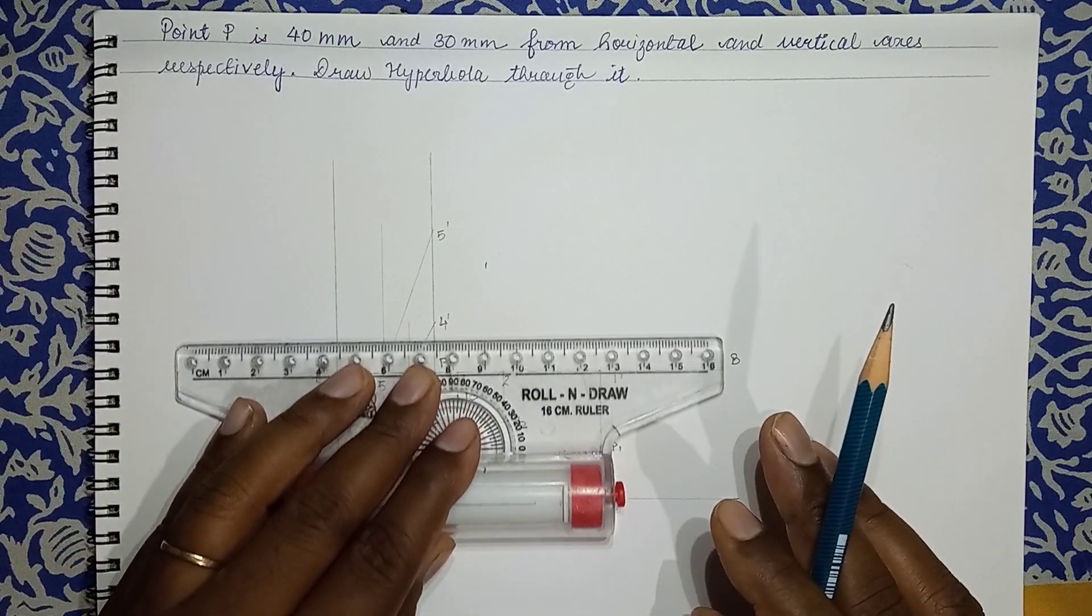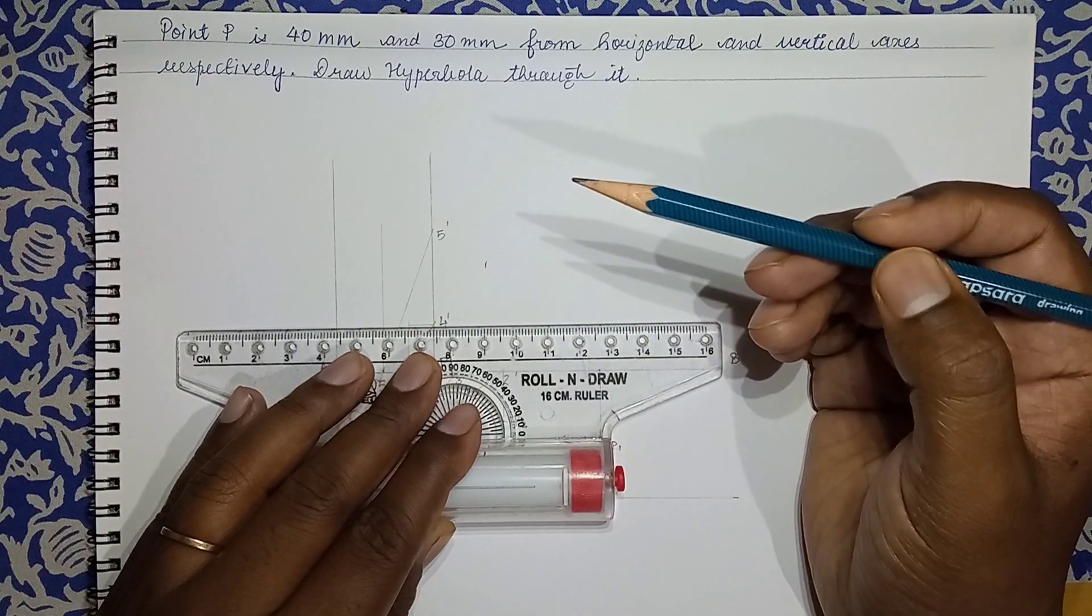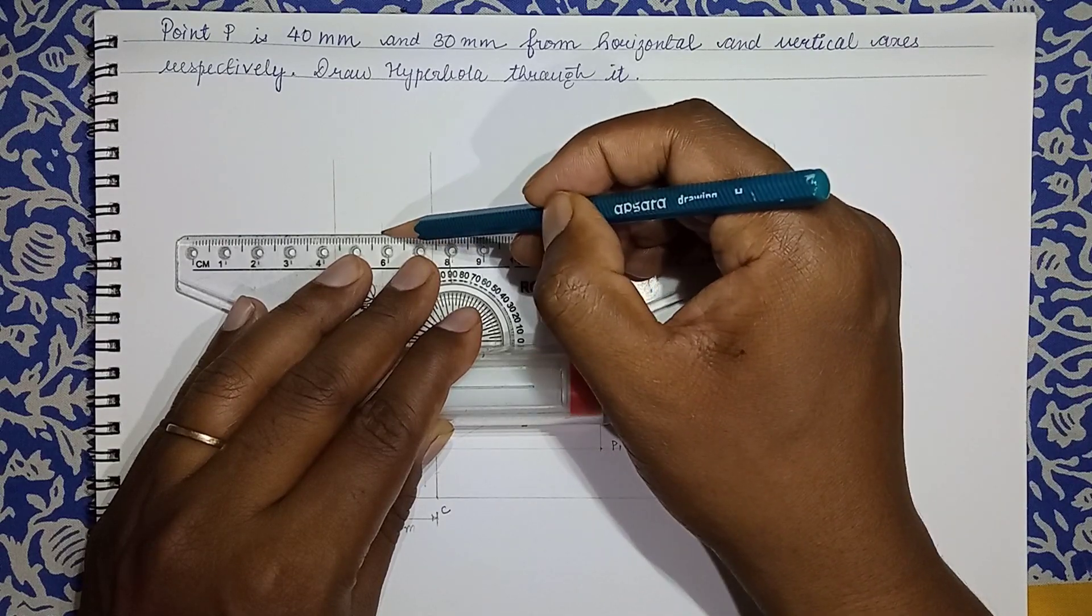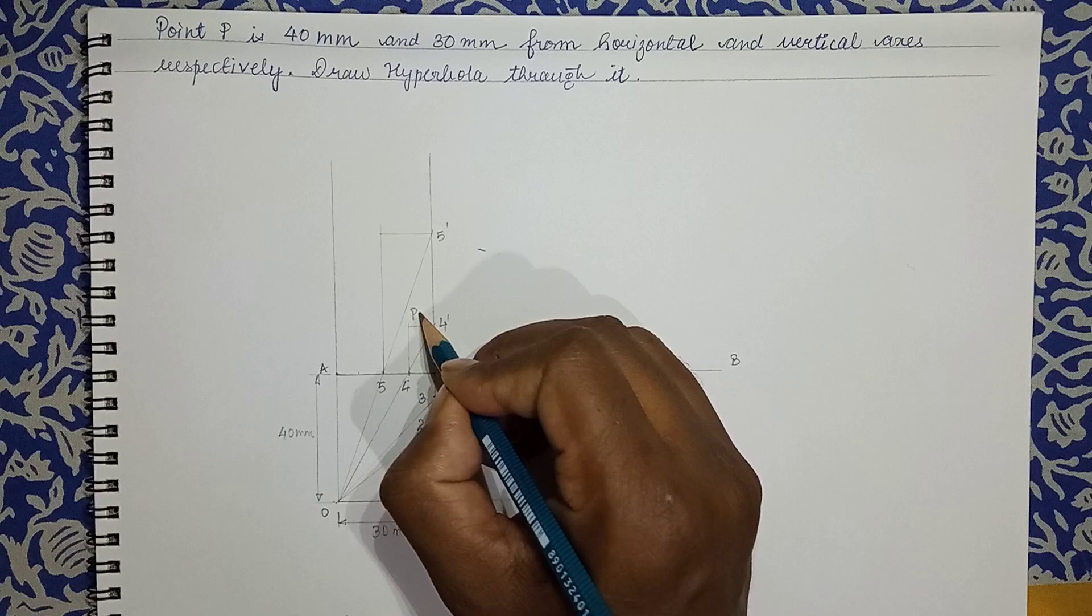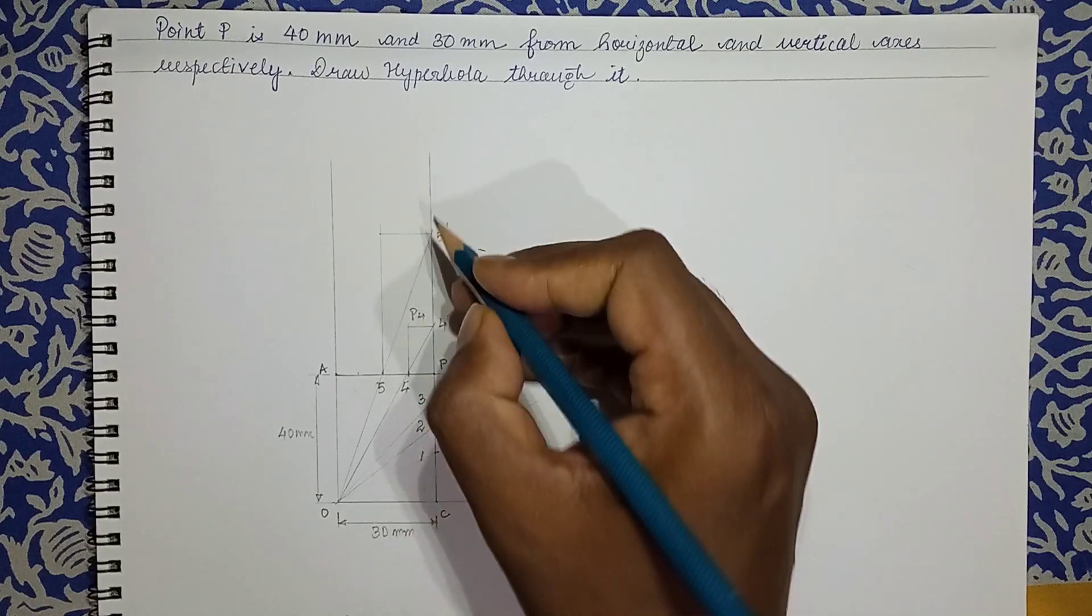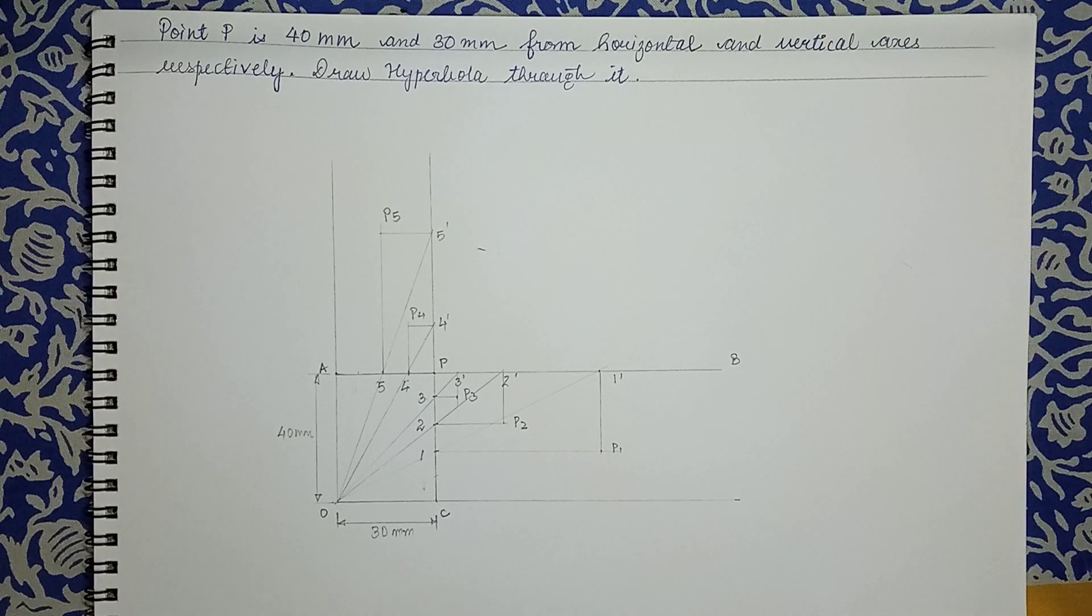Similarly, we'll draw vertical line from 4 and from 5. The construction lines need to be kept light enough. Similarly, a horizontal line from 4', from 5', to the line which is coming from 5.